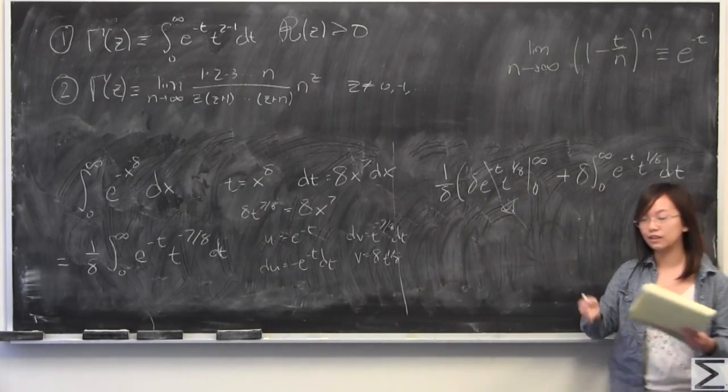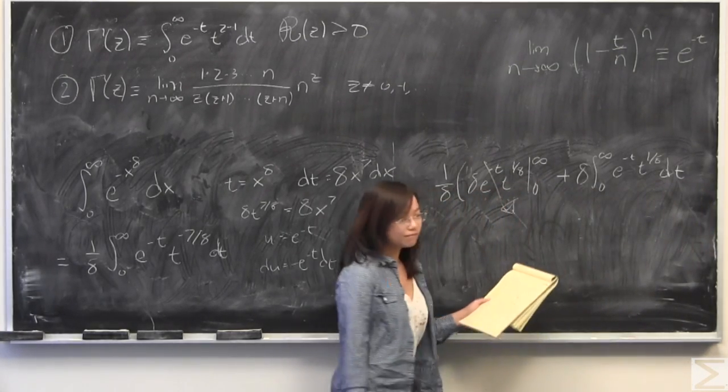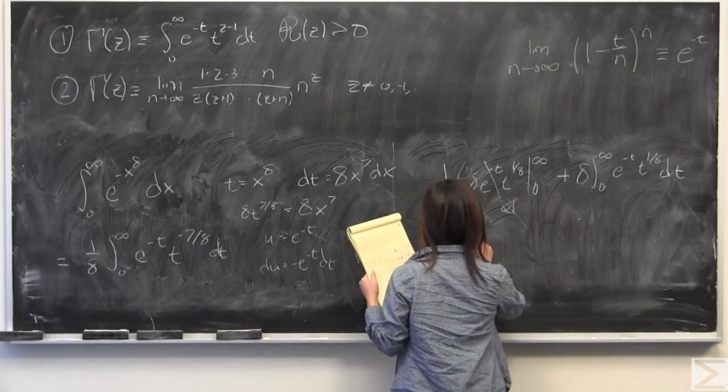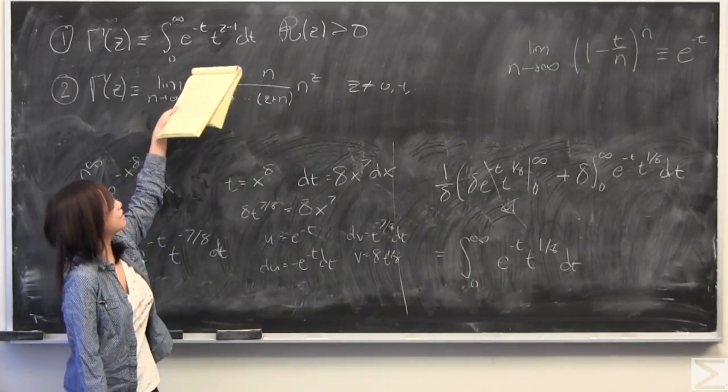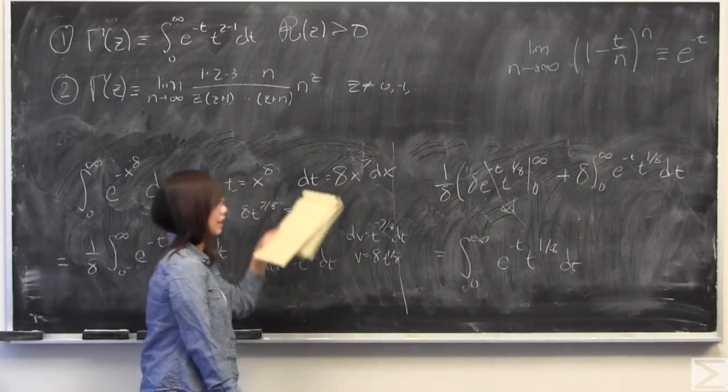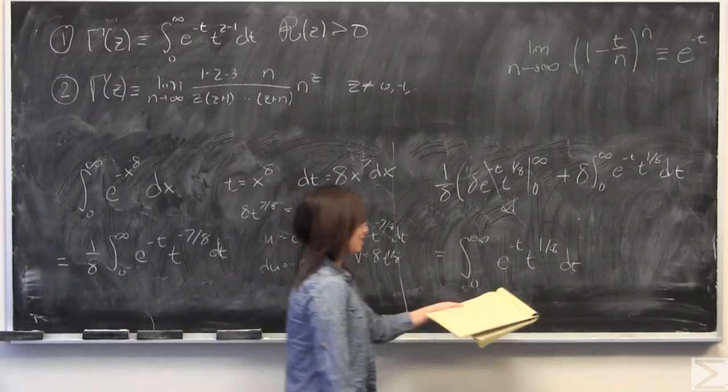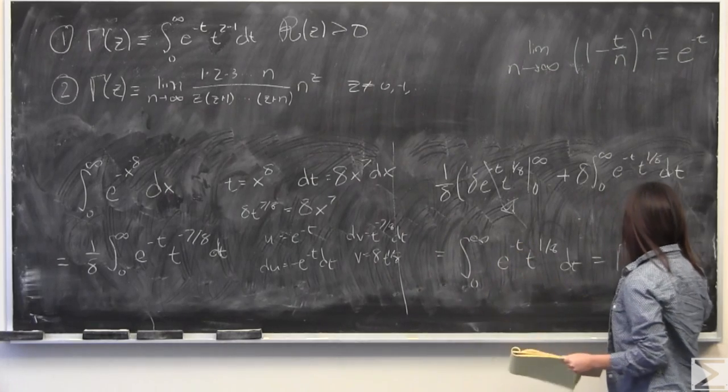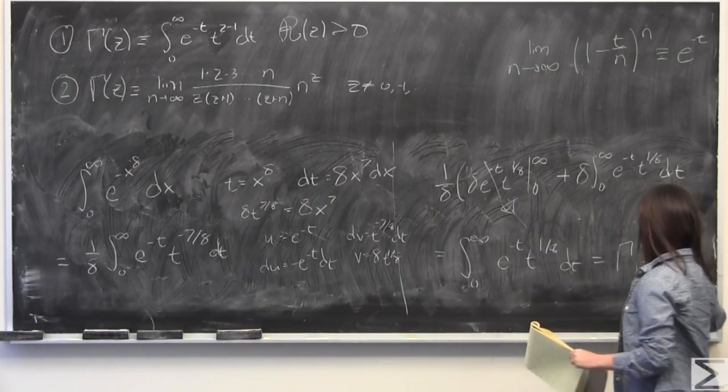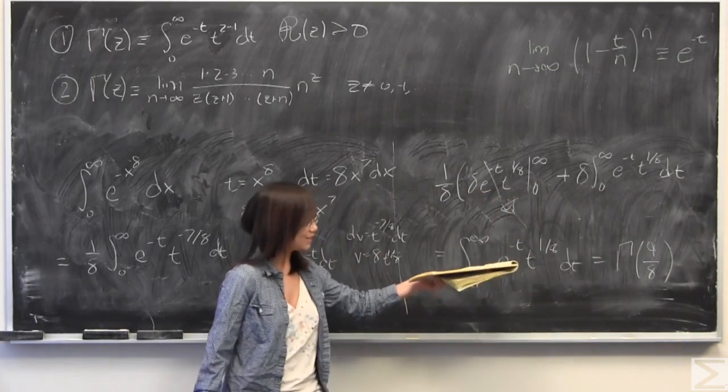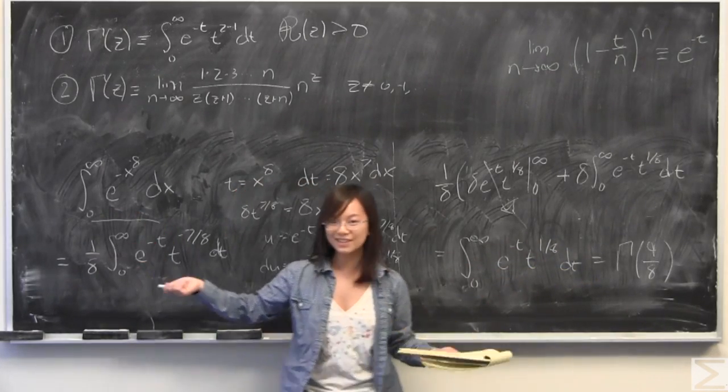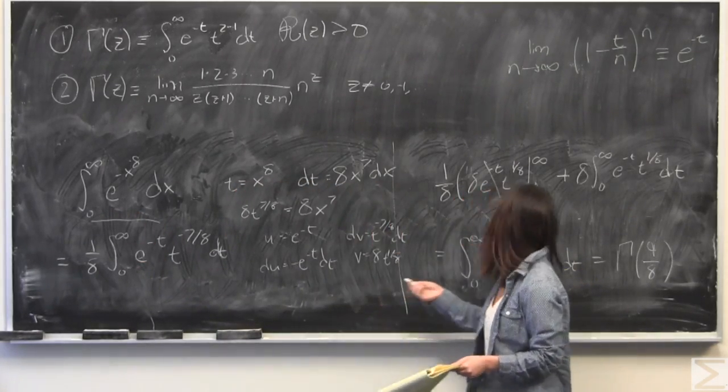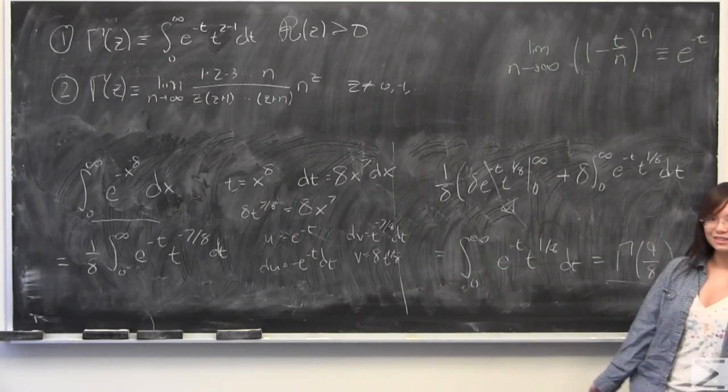We have 1 eighth and 1 eighth. Those are going to turn into 1. And then from there, that perfectly matches this definition of the gamma function, if z is equal to 9 over 8. So, this right here is equal to the gamma function of 9 eighths, and therefore we've proven that this, which looks crazy and hard to evaluate, is equal to gamma function of 9 over 8.